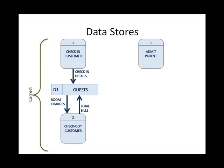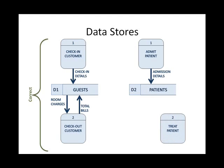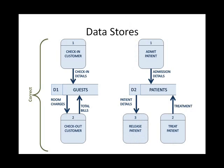Another example: a hospital where I have an 'admit patient' process. The admission details go into the 'patients' data store. Notice the numbering — D2 here — order is not important, so you could call them D1, D2, D3, as long as you don't skip numbers. A 'treat patient' process also provides treatment information to the patients data store, and a 'release patient' process takes patient details from the data store. Both incoming and outgoing data flows are present, so the rules are satisfied.